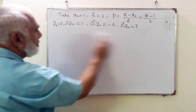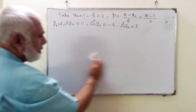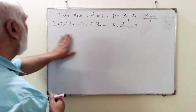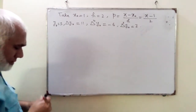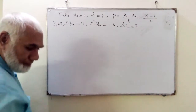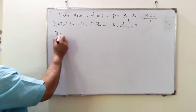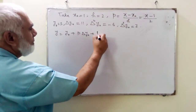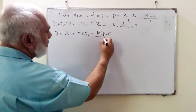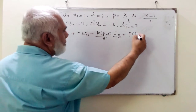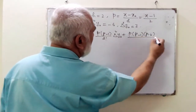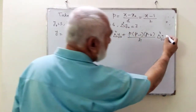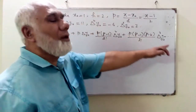You have to memorize this formula in order to solve questions. The Newton's forward interpolation formula is: y = y₀ + p·Δy₀ + [p(p−1)/2!]·Δ²y₀ + [p(p−1)(p−2)/3!]·Δ³y₀ + … We can go up to only the third difference, since all remaining terms will be zero.